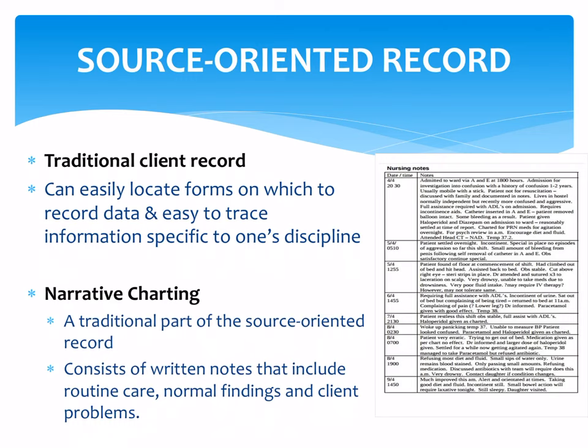We also have narrative charting, a traditional part of the source-oriented record. It consists of written notes that include routine care, normal findings, and client problems. Narrative charting is basically storytelling — from the moment you receive the patient until you endorse them to the incoming nurse, you narrate everything done. Data should be in chronological order: what you did first should be written first, and so on.